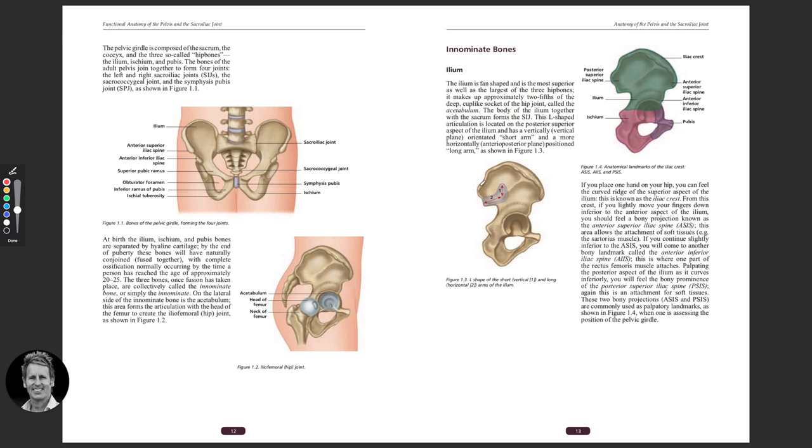On the ilium, where the sacrum meets the ilium, this is almost like the shape of an ear. So they call it the auricular surface. The sacrum naturally fits in here. Part of that, we call this number one, the short arm here, and number two is the long arm. When the sacrum goes into a motion which you will learn later, called nutation, it will go down number one and along number two. It goes inferiorly, posteriorly, along here.